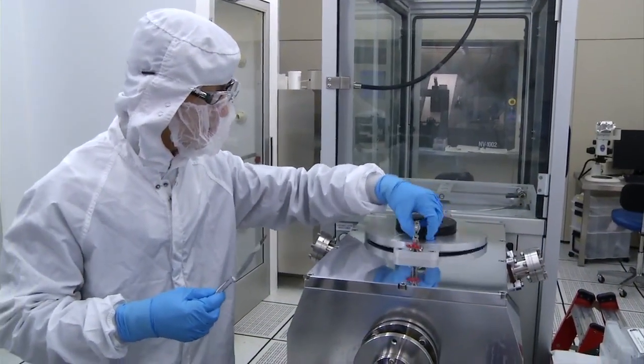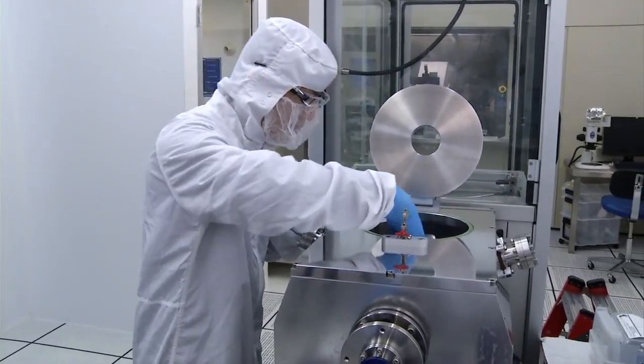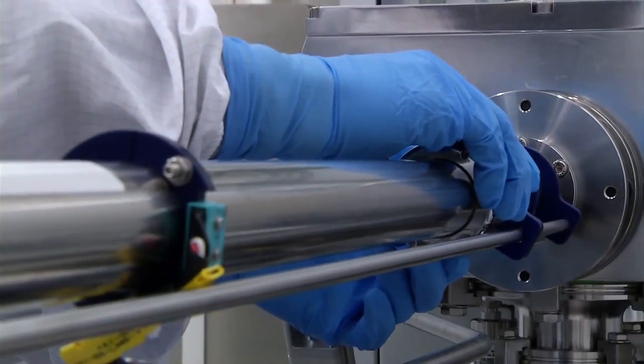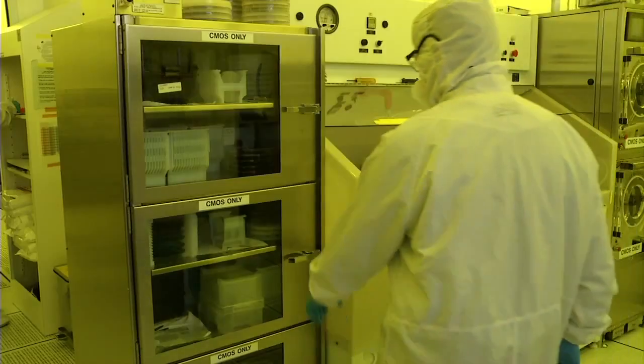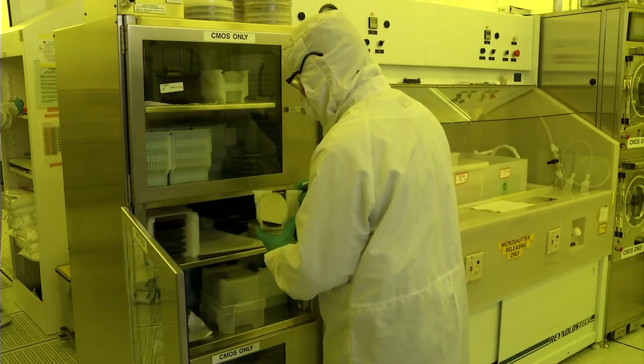Here in the atomic layer deposition system, single atomic layers of materials can be built up one by one for precise control of thickness and uniformity. Once the deposition is complete, the substrate goes back to lithography to pattern the new layer of material.